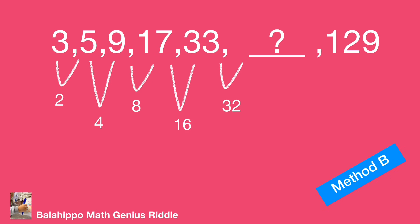Follow the pattern. The difference will be 32 between 33 and the missing number. So, we get the missing number is 65.